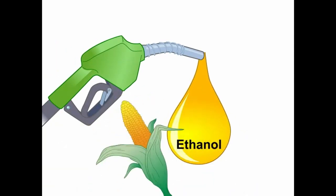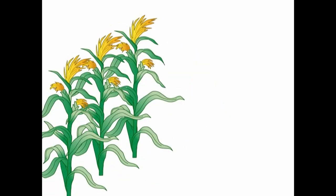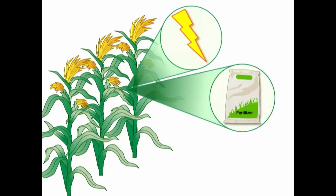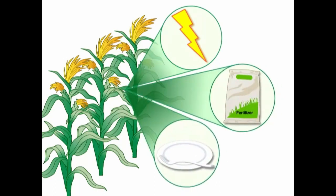While ethanol derived from sugarcane and corn is widely used, it is controversial due to its energy-intensive growth, high fertilizer usage, as well as the fact that it depletes food supply.